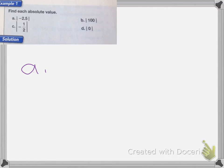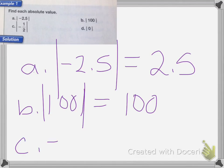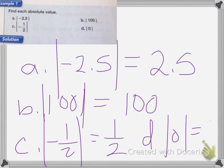So the absolute value for negative 2.5 with those two straight lines, the two straight lines means you need to find the absolute value. So the absolute value of that is 2.5 because it's still 2.5 units away from 0. It just happens to be moving to the left. For B, the absolute value of 100 is just 100 because it's 100 steps away. C, negative 1.5 absolute value is equal to 1.5. And then D, the absolute value of 0 is just going to be 0.